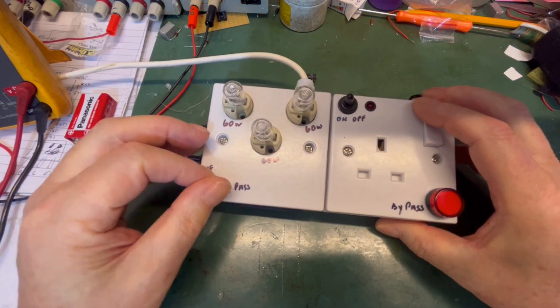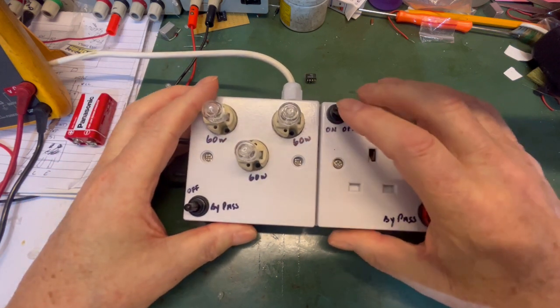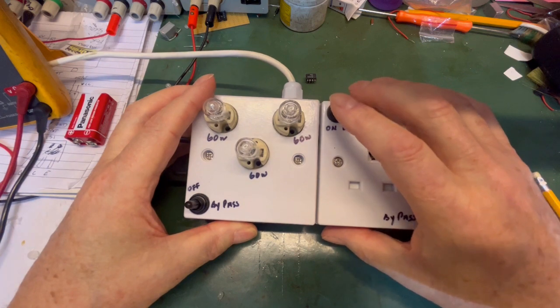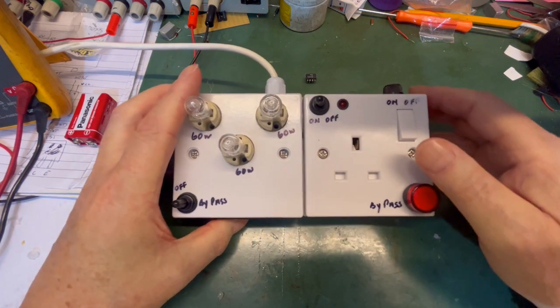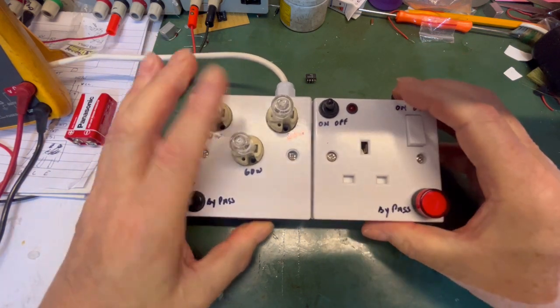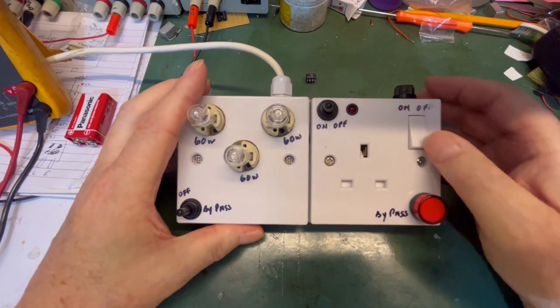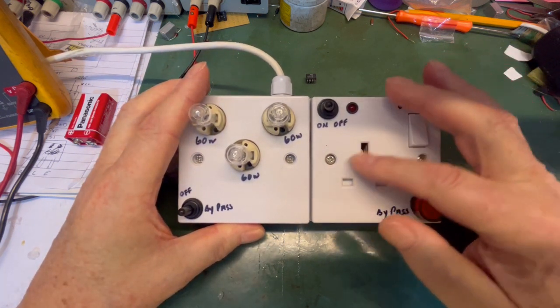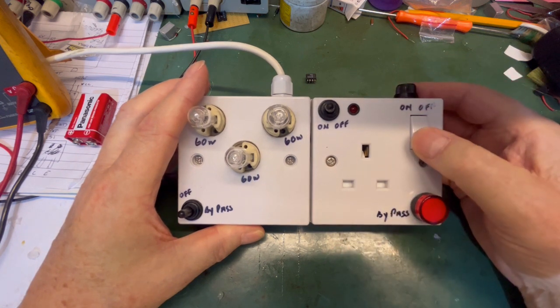Little bypass switch there. On and off switch there. That just supplies the power to this side of the circuit. That's the on and off switch. Obviously, when you plug the load in there, that will switch the load.